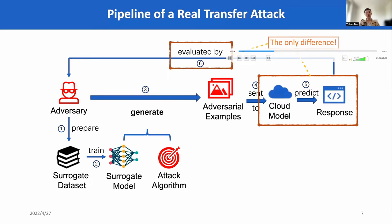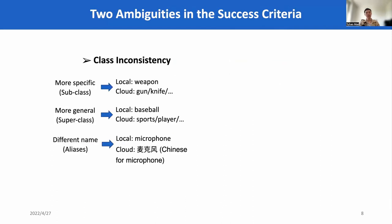More specifically, there are two ambiguities in the success criteria. The first one is called class inconsistency. There are three types of inconsistencies. First, the prediction could be more specific than the ground truth label — for example, an image could be predicted as gun or knife compared to the ground truth label weapon. Second, it could be more general than the ground truth label — for example, sports for ground truth label baseball. Third, it could use different names to describe the same object, such as using different languages.